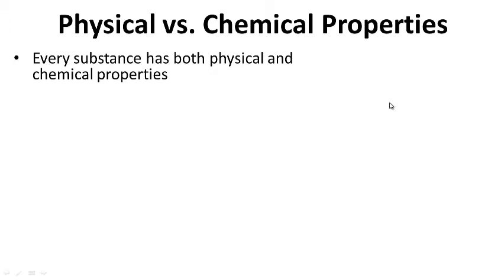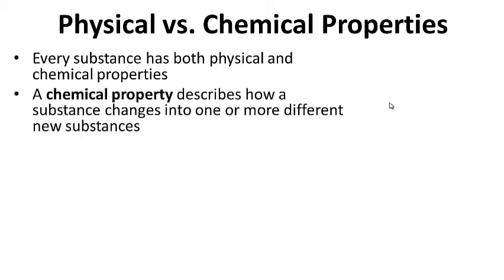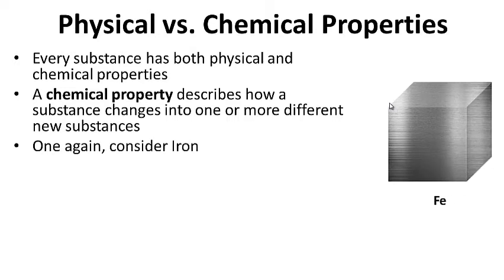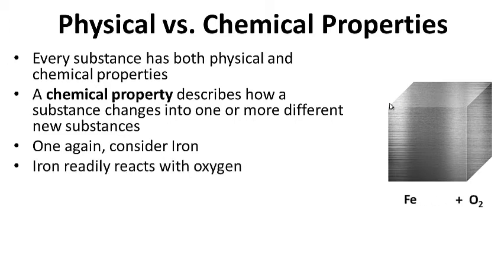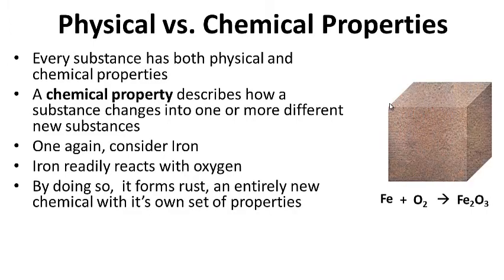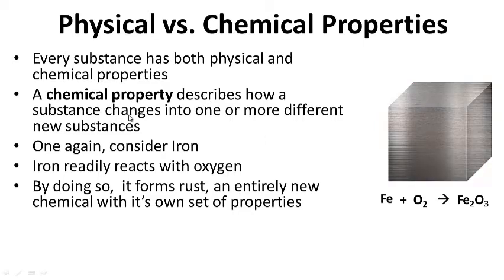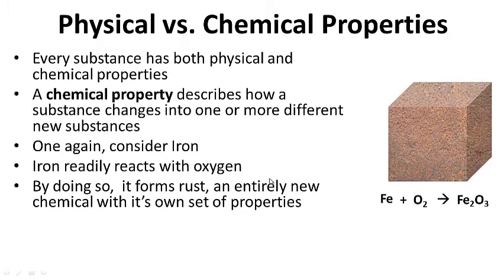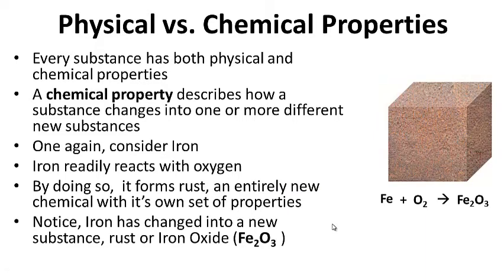Every substance has both physical and chemical properties. A chemical property describes how a substance changes into one or more different new substances. Consider iron again — a chemical property of iron is that it likes to react with oxygen to make something we're all familiar with: rust, or iron oxide. That's the surface of Mars — it's rust, iron oxide. By doing so, iron reacting with oxygen forms rust, an entirely new chemical with its own set of properties. So a chemical property of iron is that it reacts with oxygen to make rust, changing into a new substance.